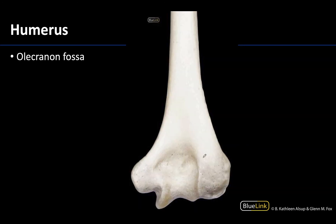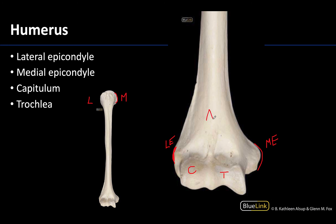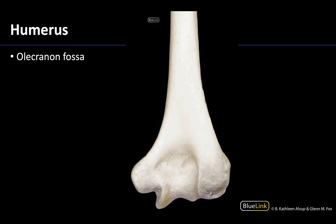Looking at a posterior view of the same bone — in contrast to the anterior view where the condyles are clearly visible — you can see a little of the trochlea and the medial epicondyle being larger than the lateral, but the dominant feature on the posterior distal portion is the olecranon fossa. It's quite large and prominent, accommodating the olecranon of the ulna during full extension of the elbow joint. You can feel this on your own elbow — fully extending shows how the olecranon fits in, projecting less than during full flexion.